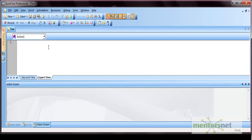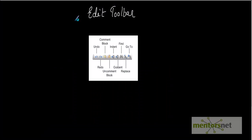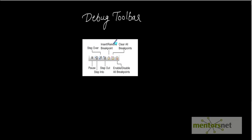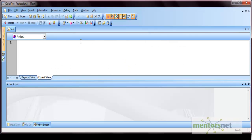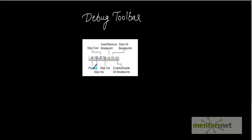The next is the edit toolbar, which has different options like undo, redo, comment block, uncomment block, find, and go-to options. The next is the debug toolbar, used for all debugging purposes — you can pause a running script, use step over and step out, insert a breakpoint, and clear all breakpoints. Make sure you are aware of these icons so that when we use them you are familiar.